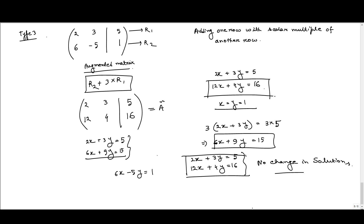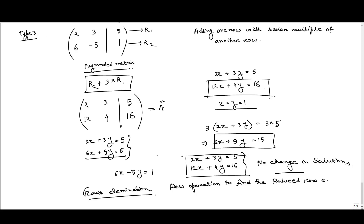Hence, whatever row operation we perform, the solution of the system remains unchanged, as we have seen in this example — and that is true in general. That is why in Gauss elimination, we perform row operations to find the reduced row echelon form, and from the reduced row echelon form we find the solution, which matches the solution of the original equation.